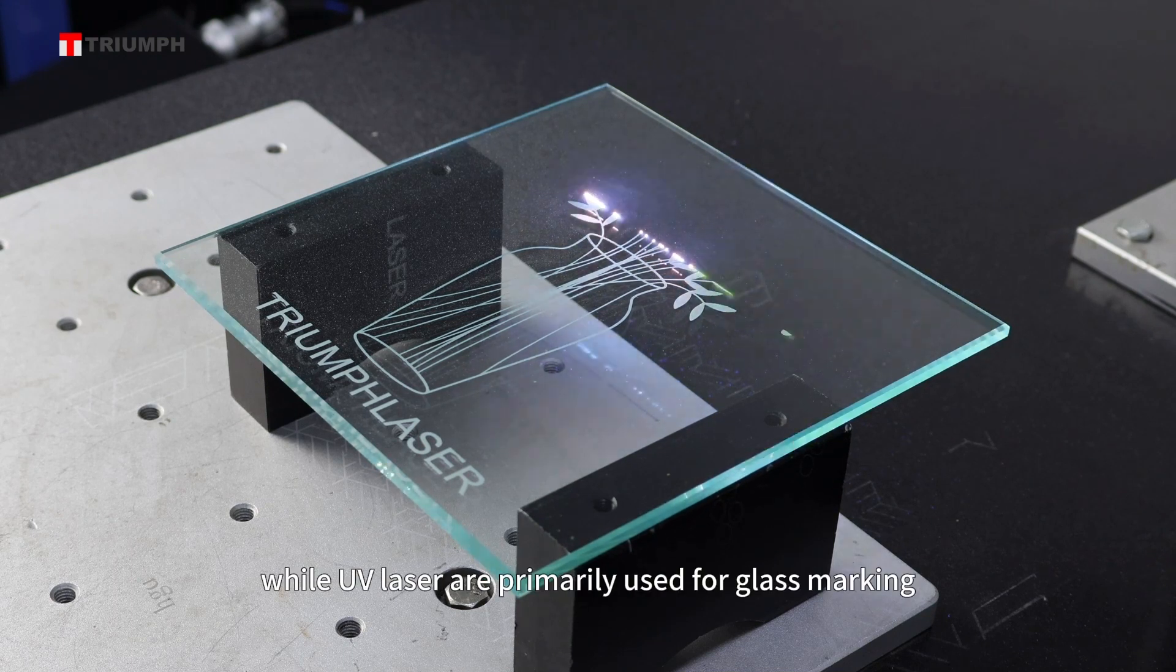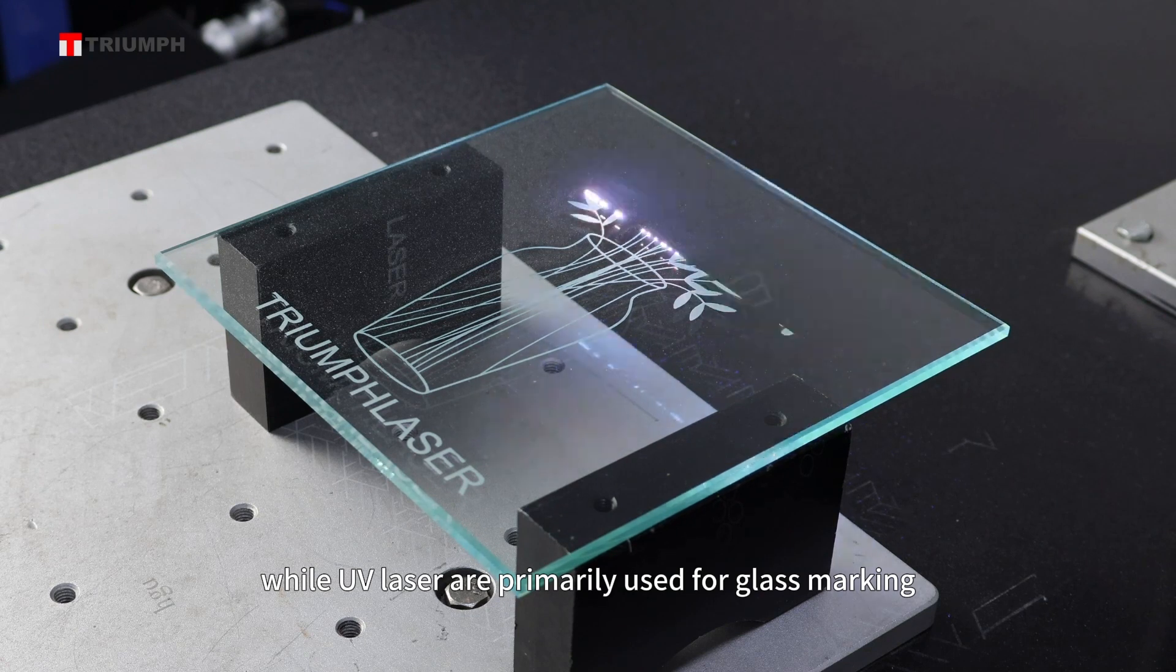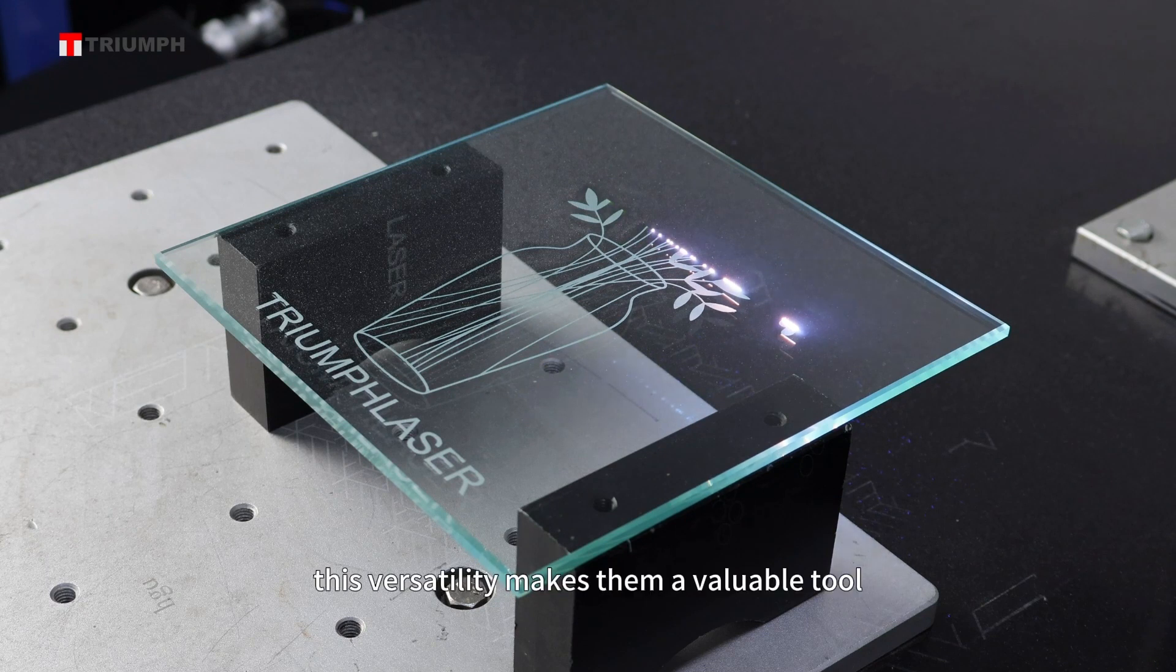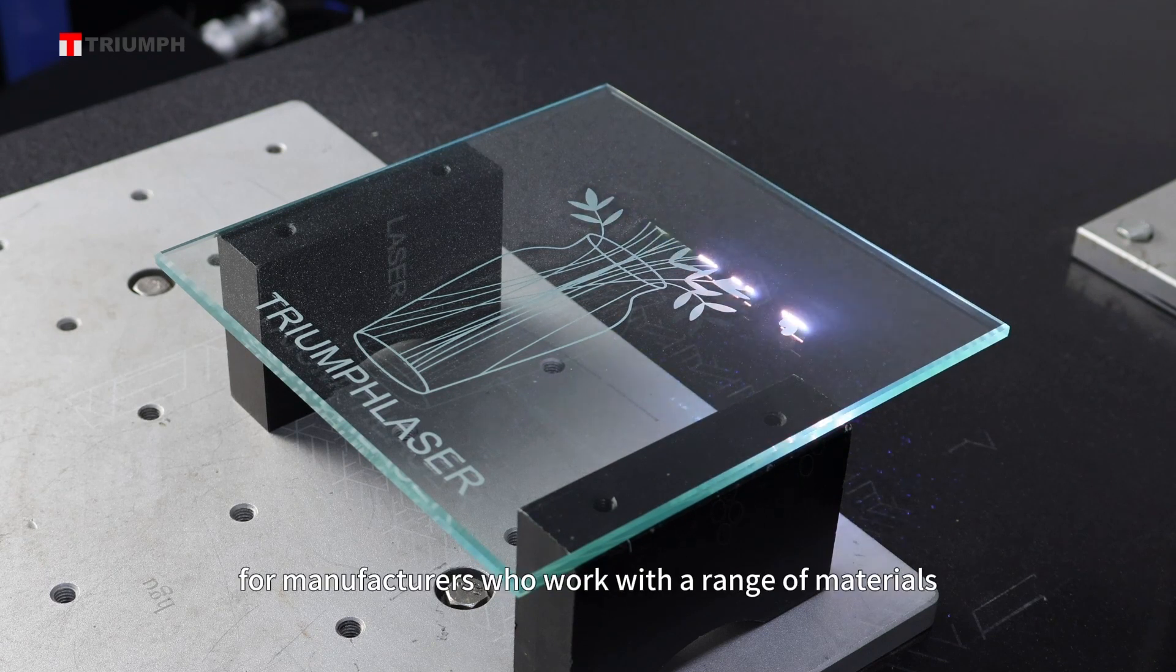Versatility. While UV lasers are primarily used for glass marking, they can also mark other materials effectively. This versatility makes them a valuable tool for manufacturers who work with a range of materials.